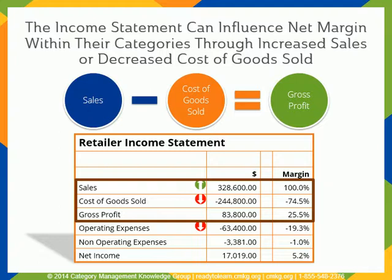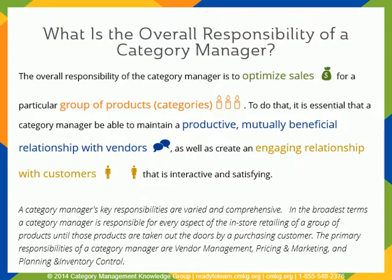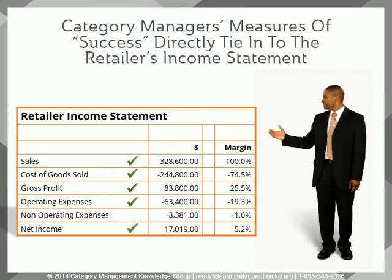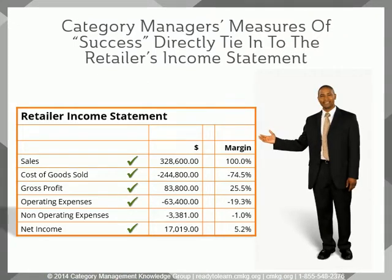But for the purposes of this training course, we'll be focusing in on the areas that they are most accountable for. This includes sales and cost of goods sold. Here's a description of what category managers, or sometimes referred to as buyers, are responsible for. Their responsibilities are varied and comprehensive. In net, they're responsible for every aspect of the in-store retailing of a group of products, or categories, until those products are taken out the doors by a purchasing customer. Based on their responsibilities, a category manager's measures of success directly tie into their retailer's income statement.